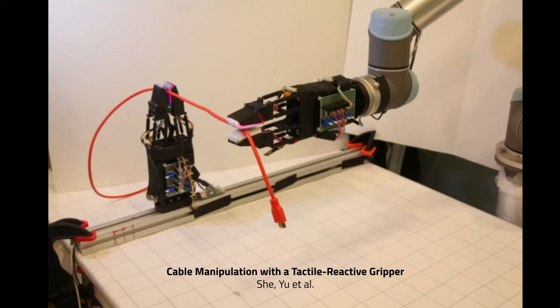In contrast, tactile sensing is not affected by such factors. More importantly, tactile sensing can provide rich contact information between the object and the hand. Nonetheless, tactile sensors are not as widely available as cameras.